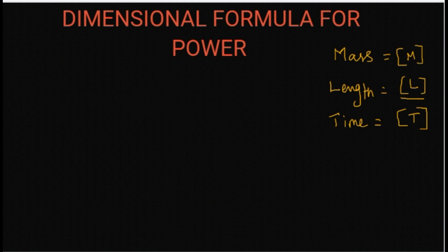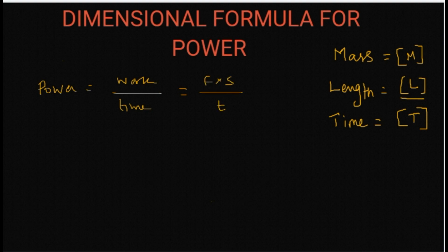We are going to see the dimensional formula for power. Power is given by work done by time, or rate of doing work. So power is equal to work by time, and work is given by force into displacement, and time I am writing as t.